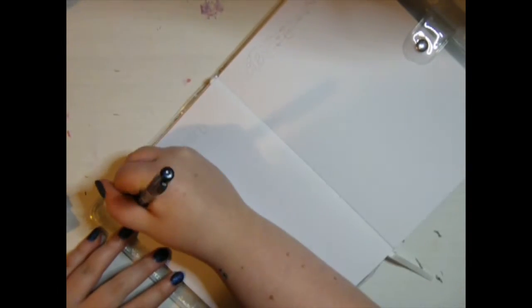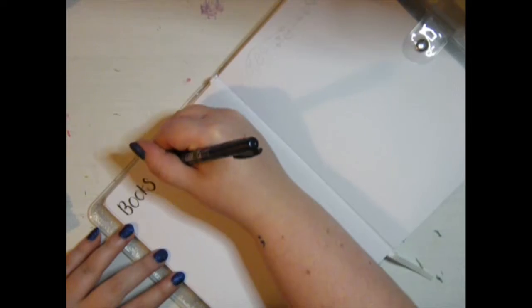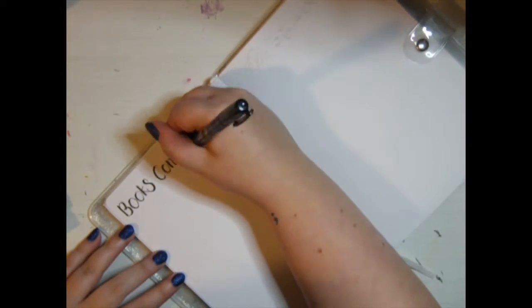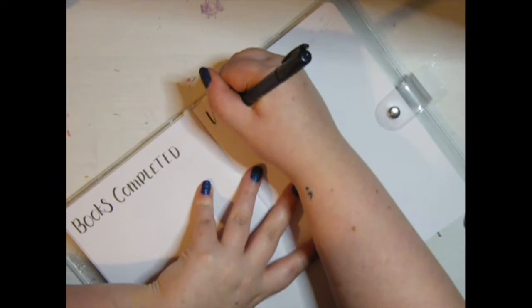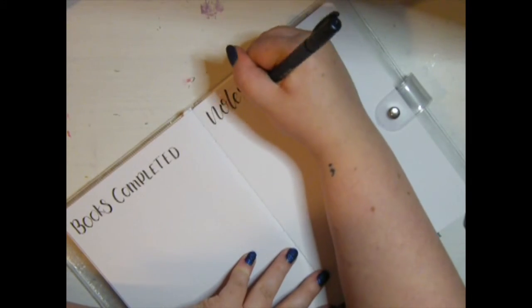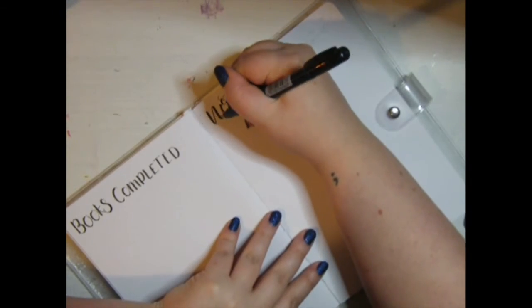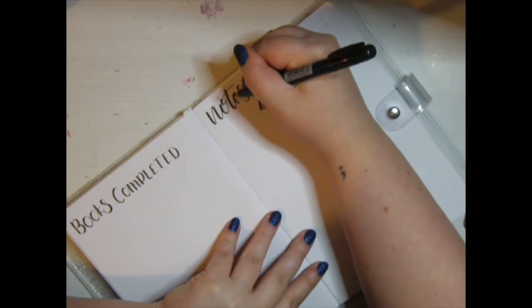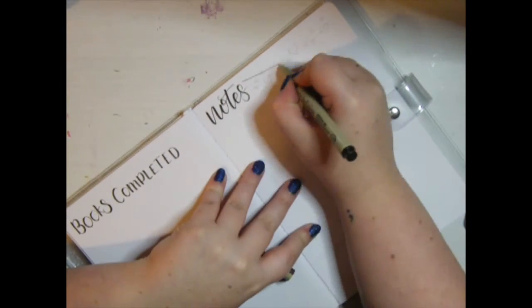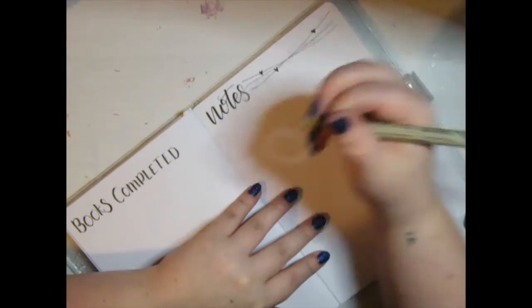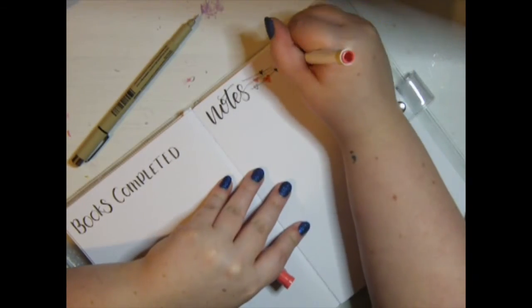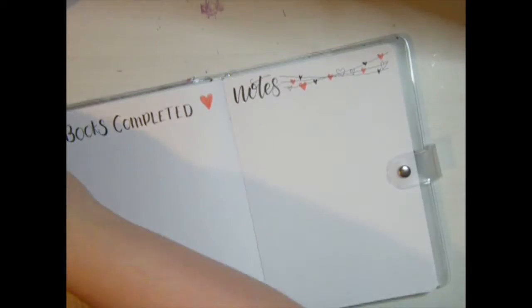Now we're on to my books completed and notes spread. These tend to be quite empty until I am actually using them. Books completed - I'll just write down the title, the dates I read it, and the rating that I gave it. Notes is for when I'm reading and I want to make a note of something, be it a quote, a page, an event that takes place, my thoughts, or where I think the plot is going.